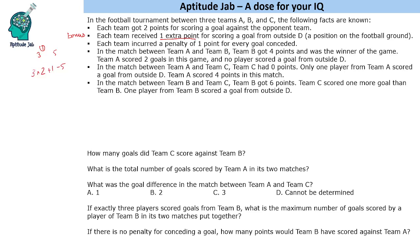We are given information about three matches: between A and B, between A and C, and between B and C. In the match between A and B, team B got four points and was the winner. Team A scored two goals in this game, and no player scored a goal from outside, so there is no bonus point in this match.